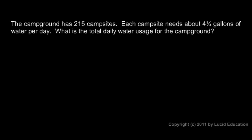Instead of multiplying 215 by 4.25, we can just get a rough estimate. We can say 215 is approximately equal to 200, and the 4.25 is approximately equal to 4.